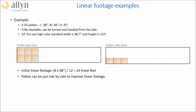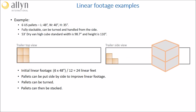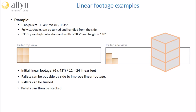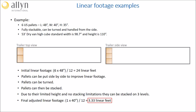These pallets can also be turned in order to further improve the usage of linear footage. It is also possible to stack them, and due to their limited height and no stacking limitation, they can in fact be stacked on three levels. Therefore, the final adjusted linear footage is just the width of a single pallet, or 40 inches, which we divide by 12, and we get 3.33 linear feet.